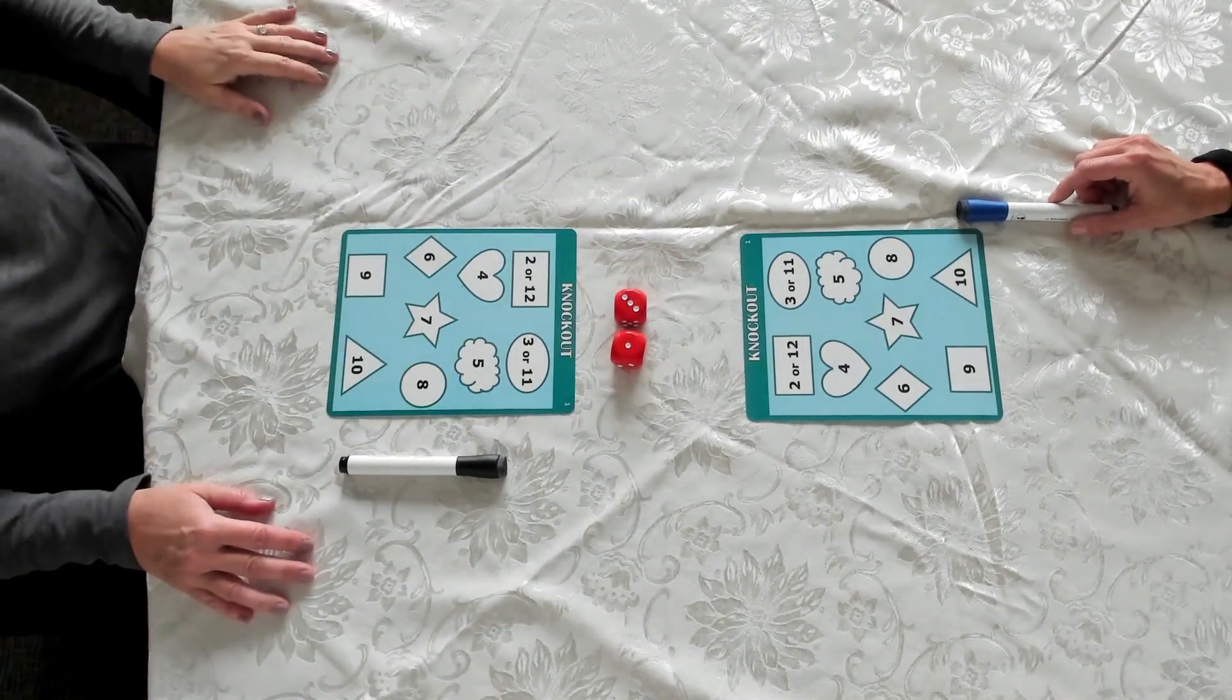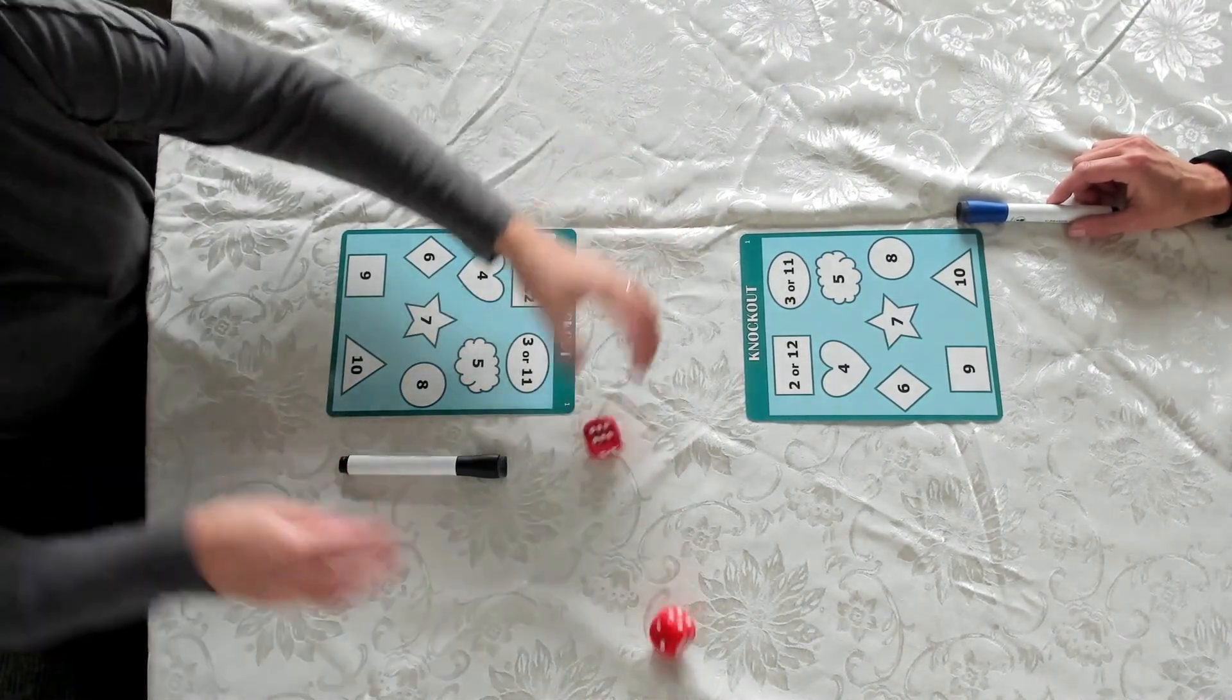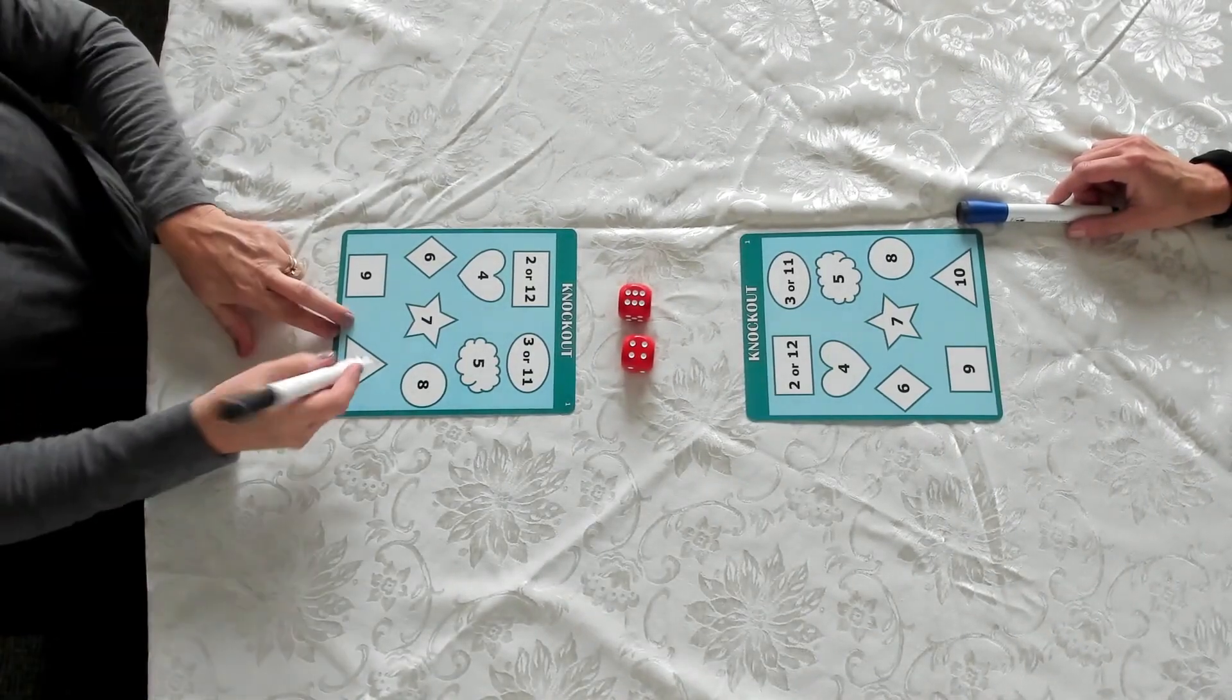So the two die, the first player will go ahead and pick up the die, roll them, and she rolls a 10. She'll mark the 10 off.